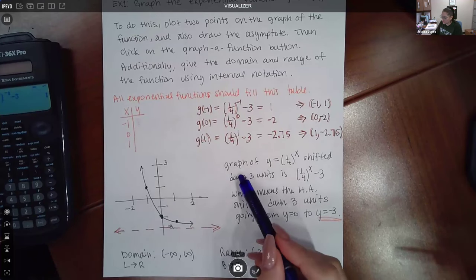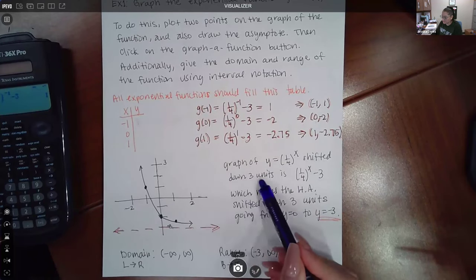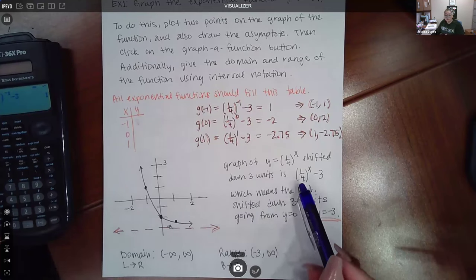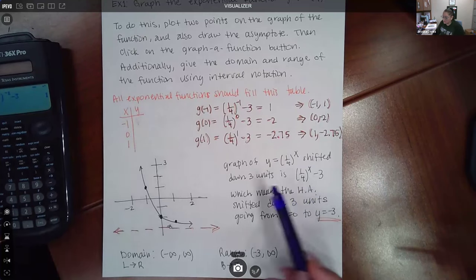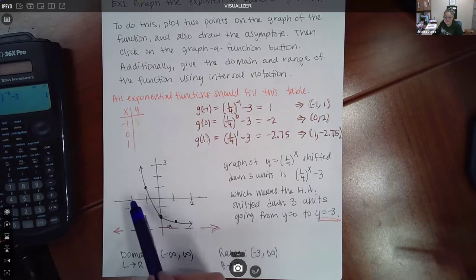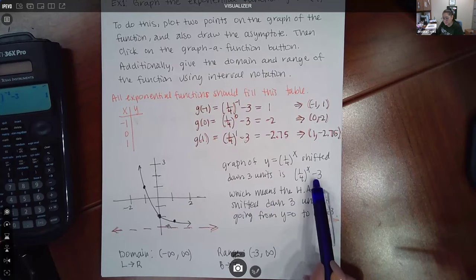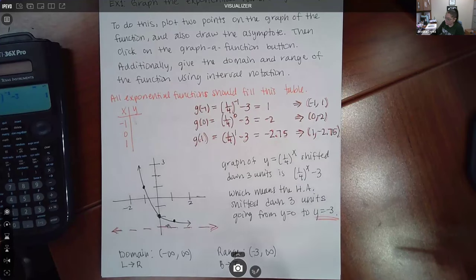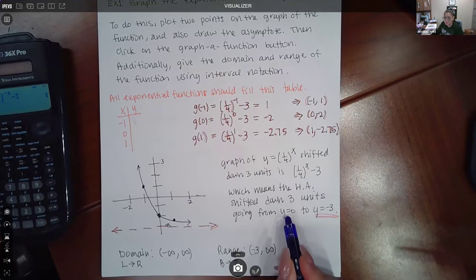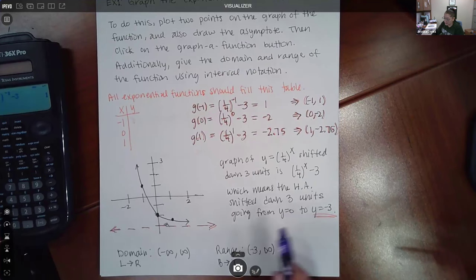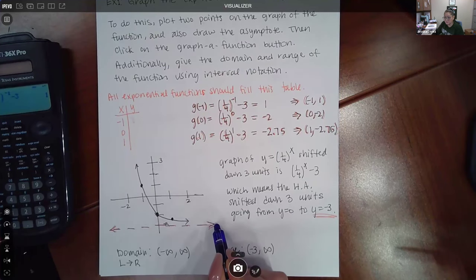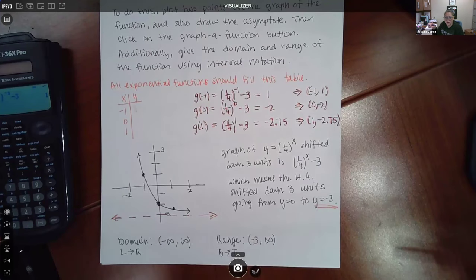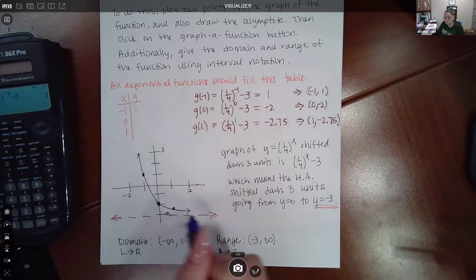Now do notice that the graph of the function is shifted down three units. Normally exponential functions have a horizontal asymptote on the y-axis, but because the graph is being shifted down three due to this minus three outside the exponential piece, it goes from being at y equals zero to now being at y equals negative three. You do have to graph that asymptote on Alex in order to click the graph of function button and actually draw the exponential graph.